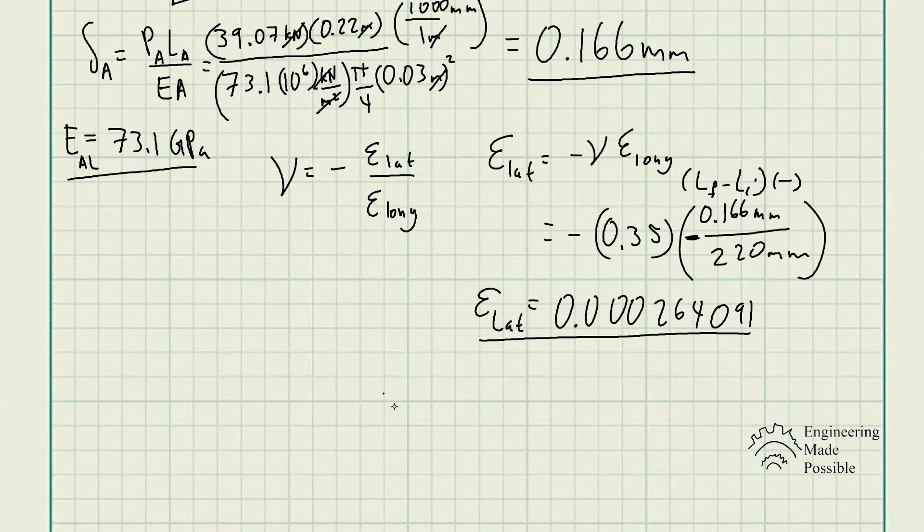This is the lateral strain. Keep in mind, the lateral strain is similar to the longitudinal strain. For the cylinder, it's the final diameter minus the initial diameter divided by that initial diameter. We can manipulate this to solve for the final diameter once it has deformed. That final diameter equals the lateral strain times the initial diameter plus the initial diameter, which gives us 30.008 millimeters.